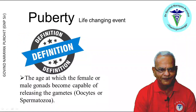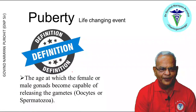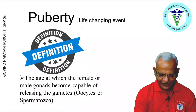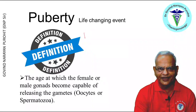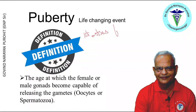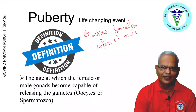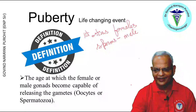First of all, let us talk about what is puberty. Puberty is the age at which the female or the male gonads become capable of releasing the gametes — the oocytes in the female or the spermatozoa in the male. Puberty is a life-changing event and it is characterized by the first estrus in the females and by the appearance of sperms in the ejaculate of the males, as well as changes in the behavior of the male and the female.